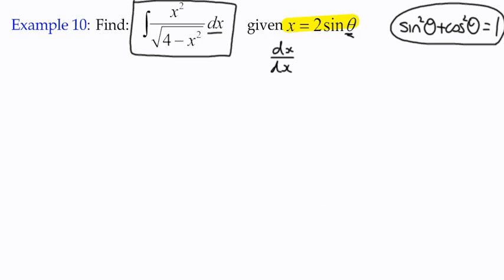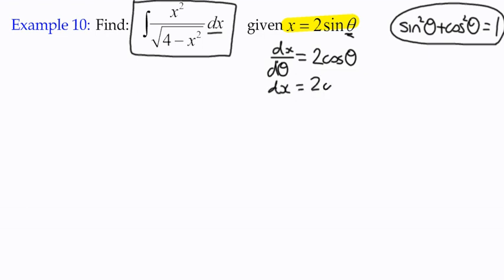We find the derivative of x with respect to θ. If we differentiate 2sinθ we get 2cosθ. Multiplying both sides by dθ gives us dx = 2cosθ dθ. So that's something we can substitute: in the new integral, instead of dx we write 2cosθ dθ.